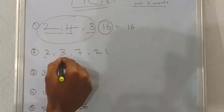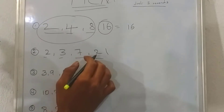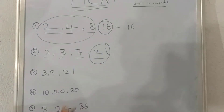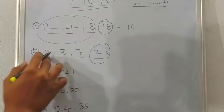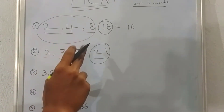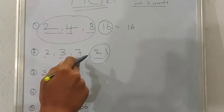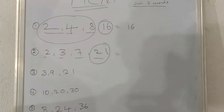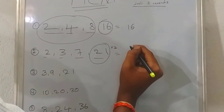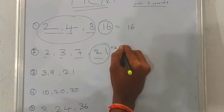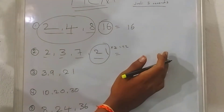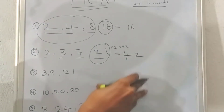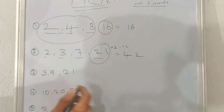The next problem is 2, 3, 7, 21. Here we choose the biggest number. The biggest number is 21. 21 is also a divisor. 2 is not a divisor, 3 is not a divisor, 7 is a divisor. We will write the answer as simply as possible.